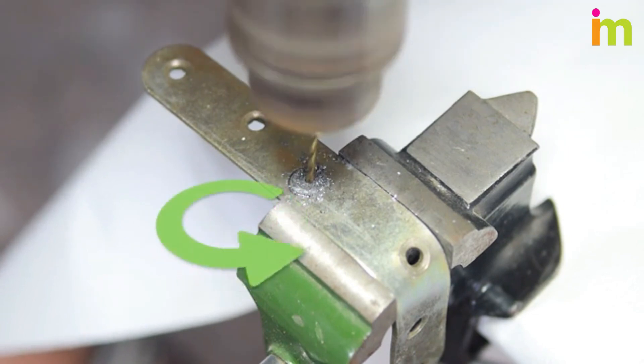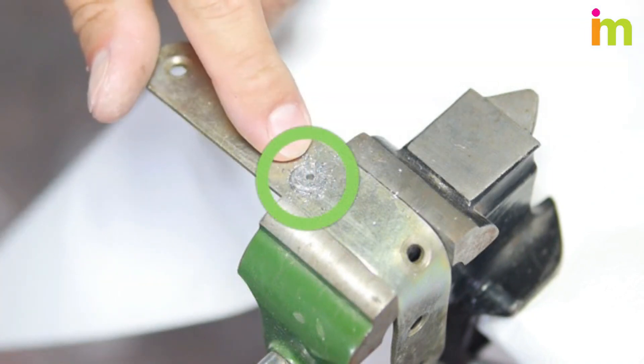Using too big a bit will risk damaging the threads on the bolt, and using too small a bit will require a smaller, weaker extractor with a higher risk of breaking off during the process. Make sure you use the appropriate size drill bit.